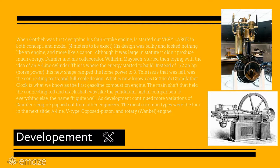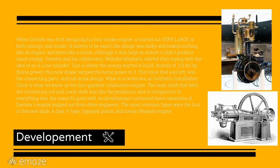Daimler and his collaborator, Wilhelm Maybach, started toying with the idea of an A-line cylinder. This is when the energy started to build. Instead of one half of an HP, or horsepower, his new shape ramped the horsepower to three. The issue that was left was the connecting parts and full-scale design. What is now known as Gottlieb's grandfather clock is what we know as the first gasoline combustion engine. The main shaft that held the connecting rod and crankshaft was like a pendulum, and in comparison to everything else, the name fit quite well.